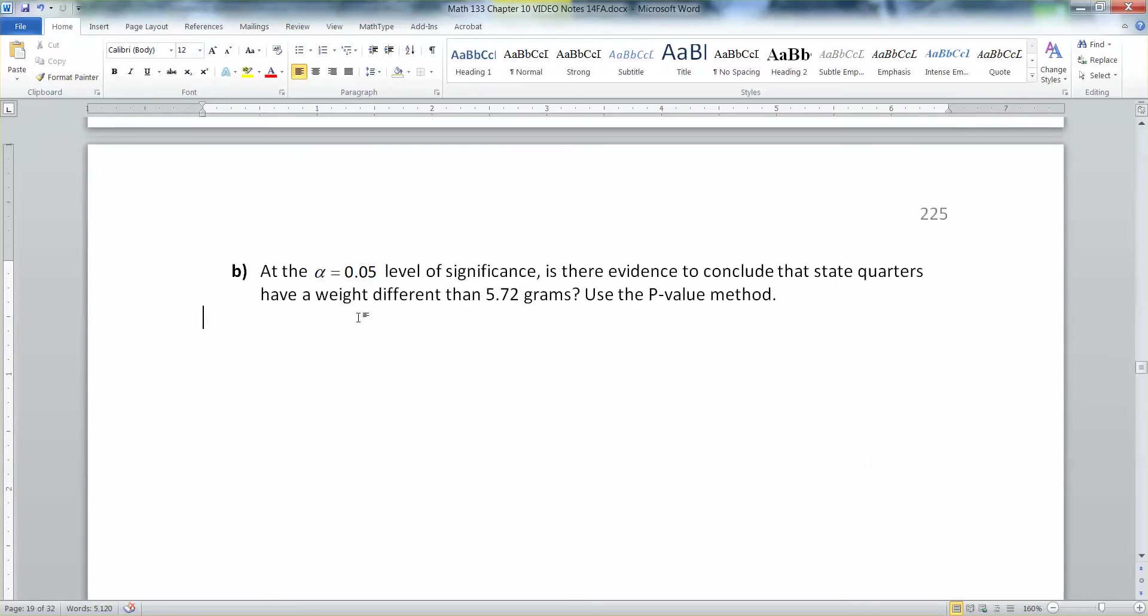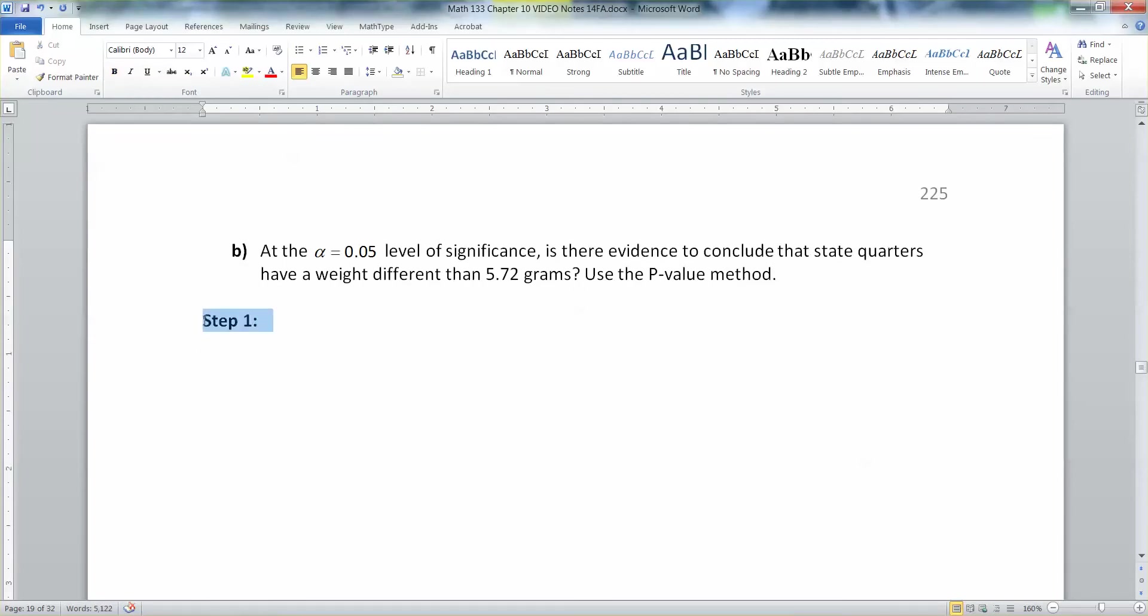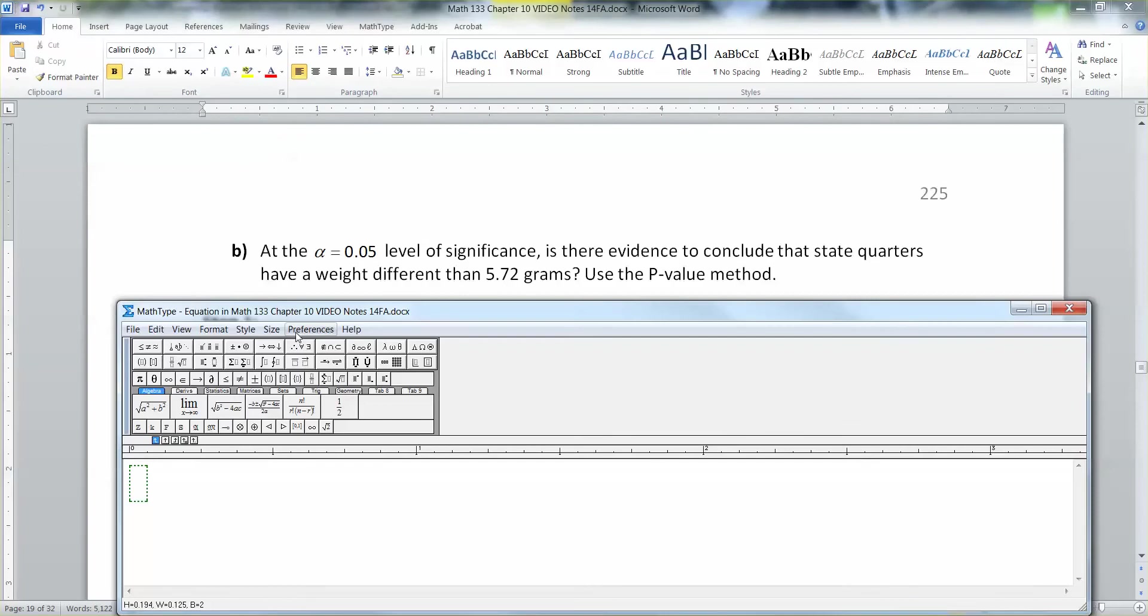All right, let's start off this hypothesis test they're asking for here at the 0.05 level significance. Let's start off with creating some hypotheses. So remember, you always need to show all six steps when you're doing these problems. If I were you and I wanted full credit on a problem like this on an exam, I'd make sure to clearly mark them as step one, step two, and so on. All right, so let's start with our hypotheses.